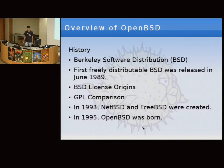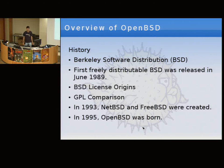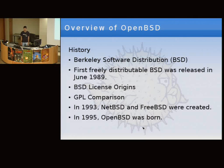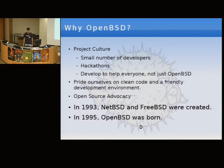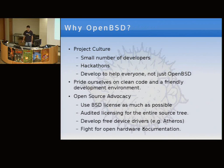In 1993, two projects were formed. NetBSD catered to more technical users and aimed to support as many hardware platforms as possible. At the same time, FreeBSD was started by another group to make Unix really easy to use, making it available on CD-ROM. OpenBSD started two years later, forking off of NetBSD.